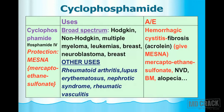Cyclophosphamide is an important anti-cancer agent because it has a broad spectrum against various cancers. It is useful against Hodgkin's lymphoma, non-Hodgkin's lymphoma, multiple myeloma, and leukemias. In addition, it is useful in breast cancer and neuroblastoma.